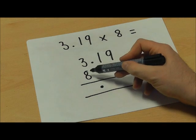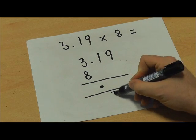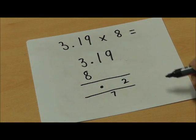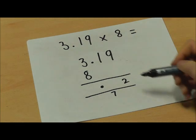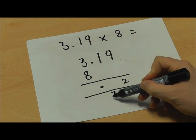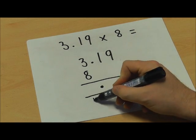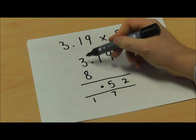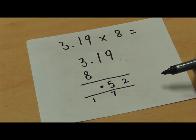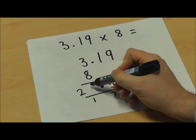So I'm going to do 9 multiplied by 8 which equals 72. I'm going to do 1 times 8 which equals 8 plus that 7 is 15 and then 3 times 8 equals 24 plus that 1 is 25.